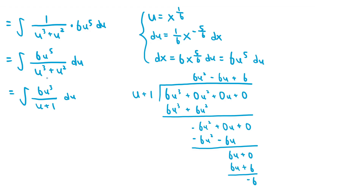The next thing we need to do is use polynomial long division to simplify the rational function. If we take the numerator, 6u cubed, and divide by the denominator, u plus 1, we get a quotient of 6u squared minus 6u plus 6 and a remainder of negative 6. This means we can rewrite the rational function as 6u squared minus 6u plus 6 plus negative 6 over u plus 1. Whenever the degree of the numerator is greater than that of the denominator, polynomial long division lets you rewrite it as the quotient plus remainder over denominator, ensuring the remaining rational function has numerator degree less than denominator degree.